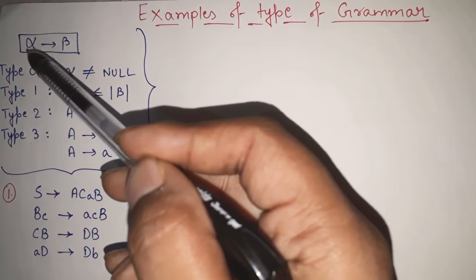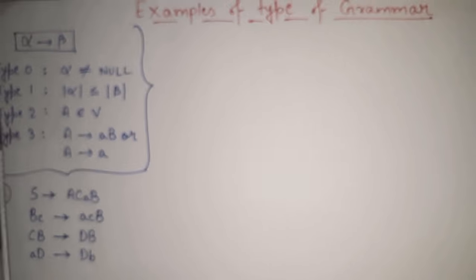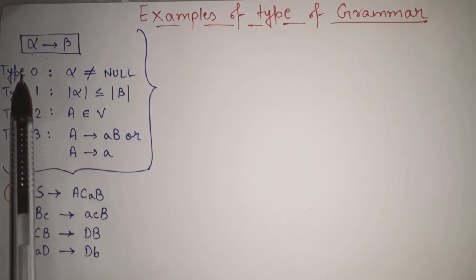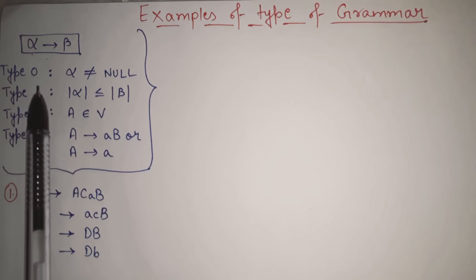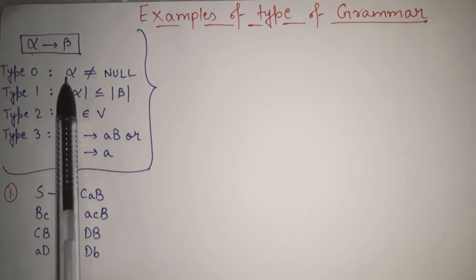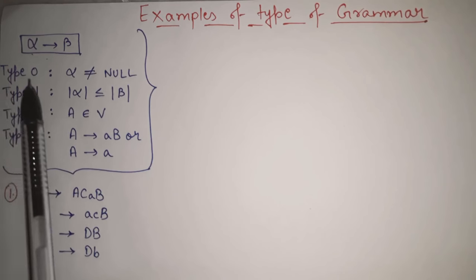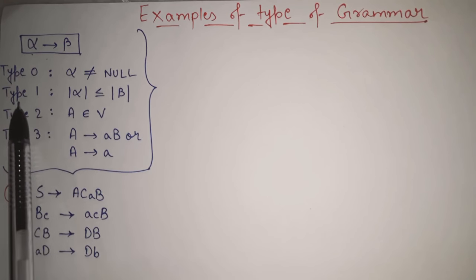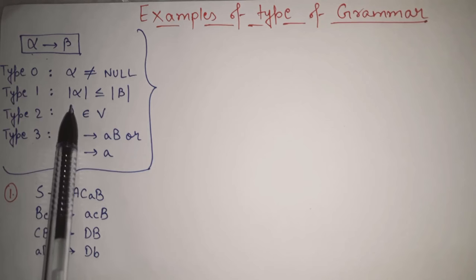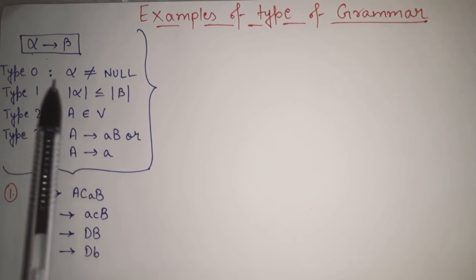Alpha gives beta will be the general form of our grammar. Now, if I want to check if this is type 0 grammar or not, the condition that must not be violated is: in type 0, alpha must not be equal to null. This alpha, or the LHS, must not be equal to null in type 0. This is the main condition. The main condition of type 1 grammar is the length of alpha — modulus alpha means length of alpha — must always be less than or equal to the length of beta.